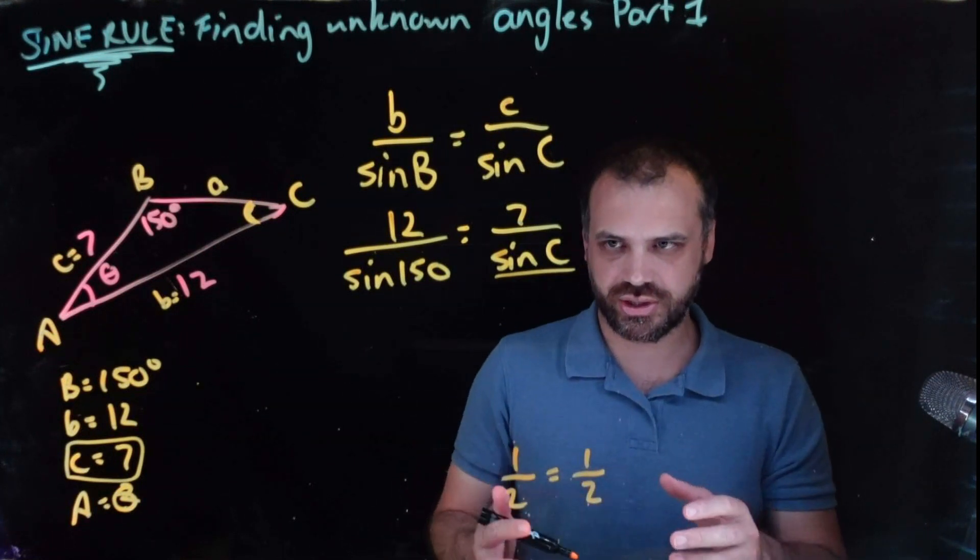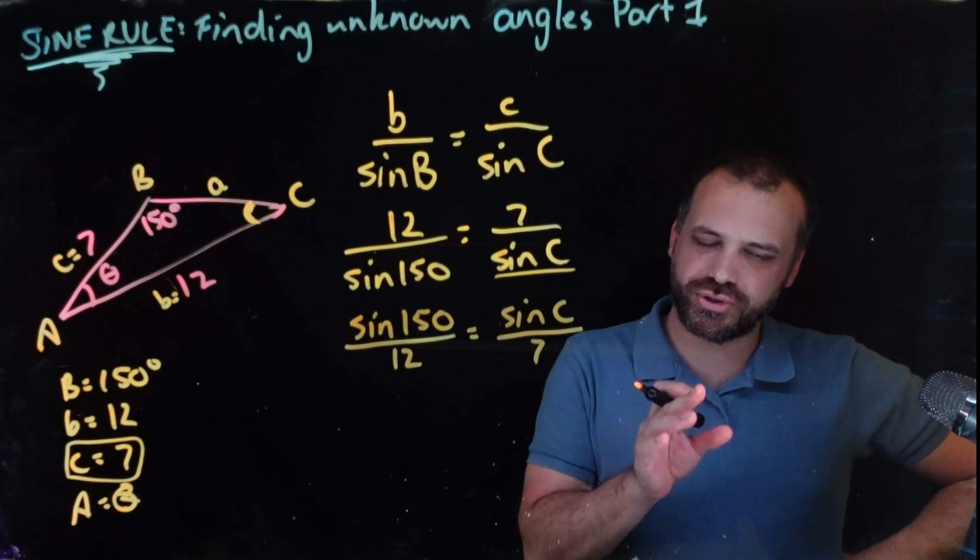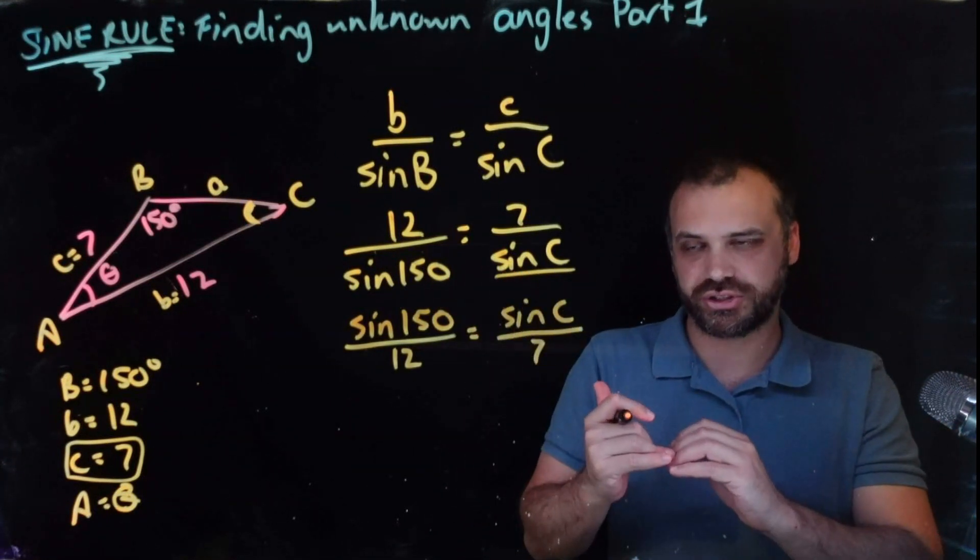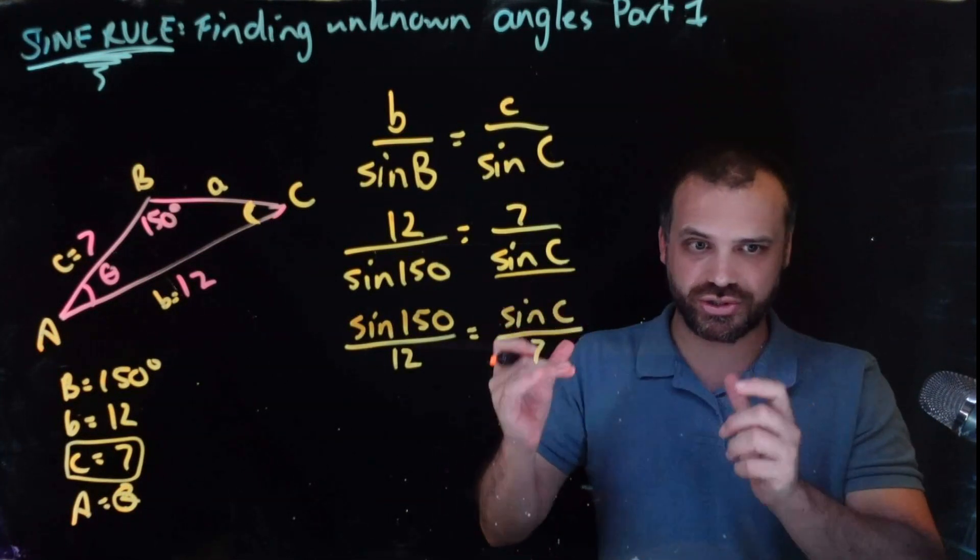So we can flip both sides of a fraction, no problem at all. It's very important you do this. You can't get C by itself while it's on the bottom of a fraction. So if you've got an unknown and it's sitting on the bottom of a fraction, you've got to get it to the top of the fraction.